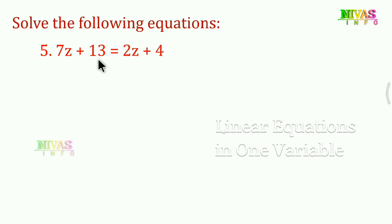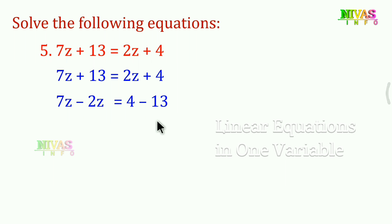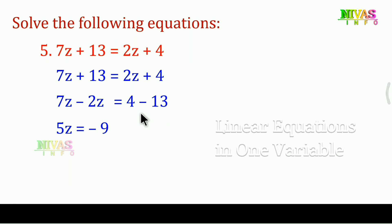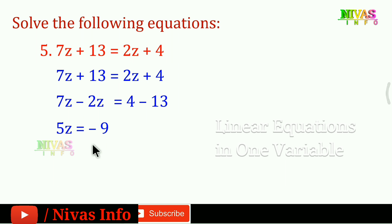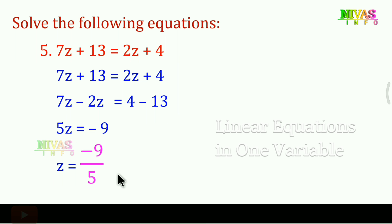Question 5: 7z plus 13 is equal to 2z plus 14. Same — you can transpose at a time. 7z minus 2z is 5z on the left. 14 minus 13 on the right is 1 — wait, right side: negative 13. 5z is equal to negative 9 upon 5. Only one z value is equal to negative 9 upon 5.